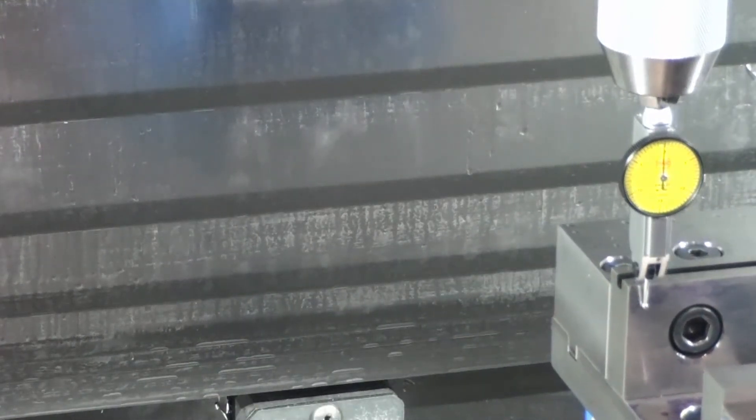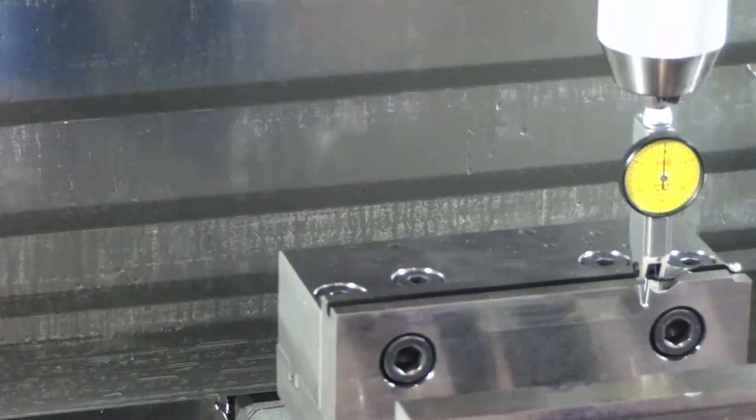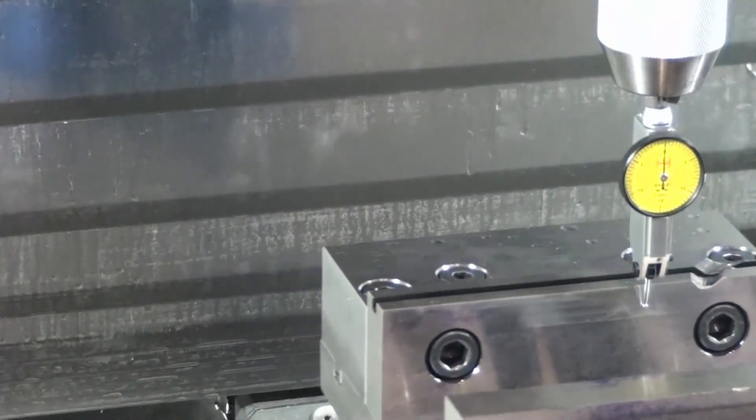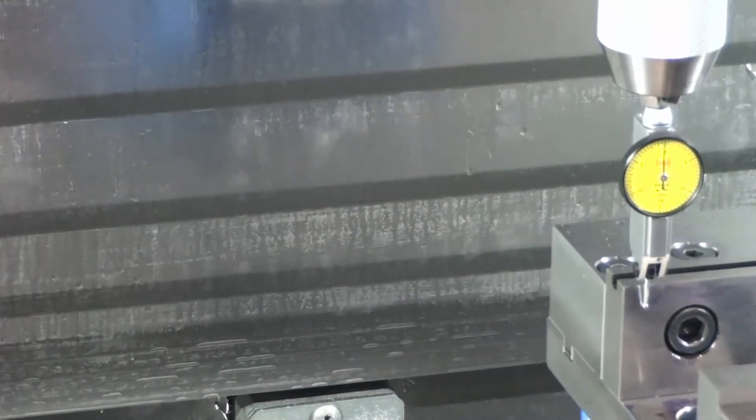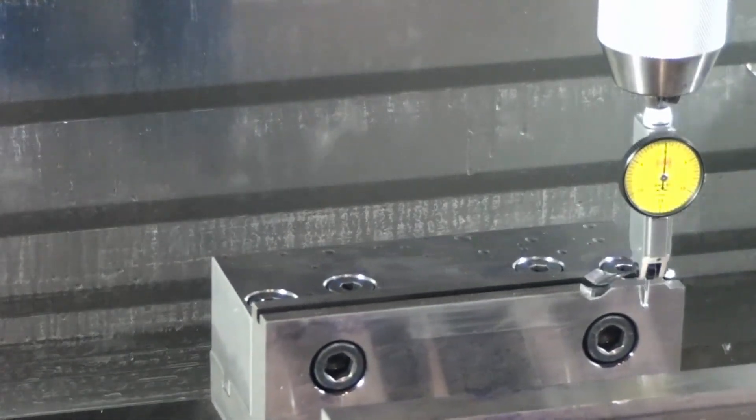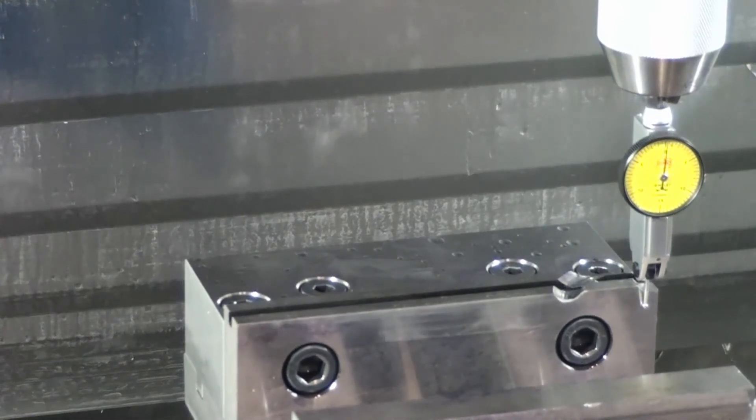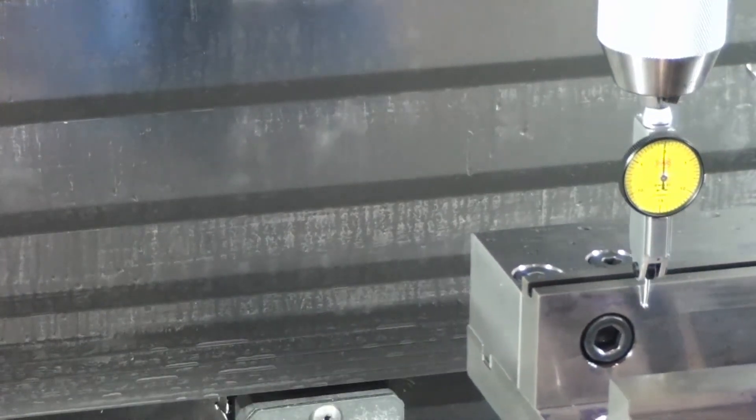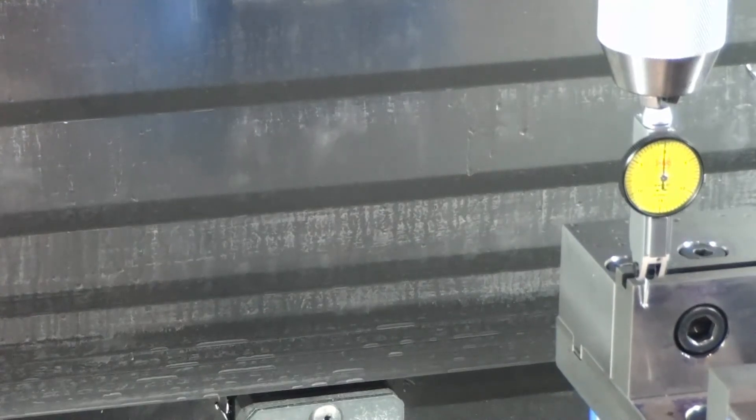We want those two numbers to be reasonably the same amount. Now we're using a five ten thousandths indicator here. So basically one separation on this indicator is five ten thousandths of an inch. If you get it within five ten thousandths of an inch, that is fine.